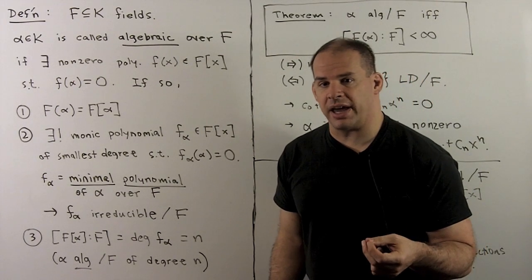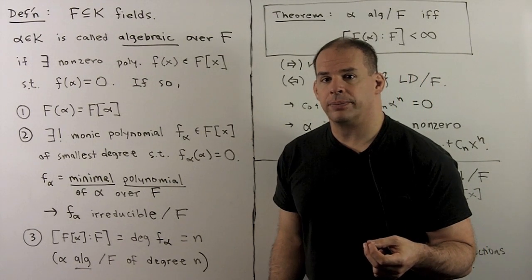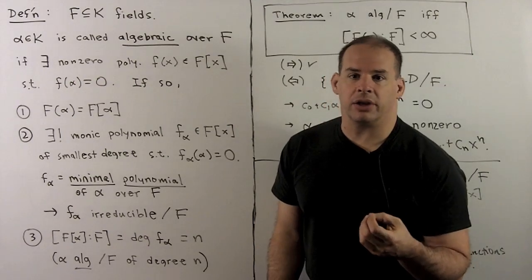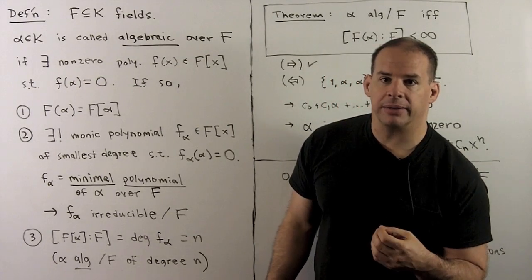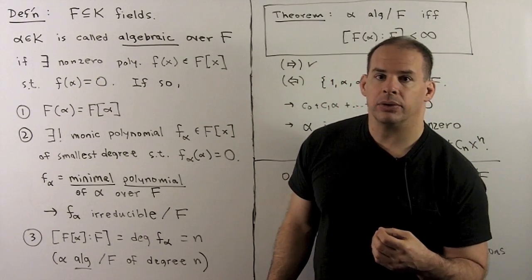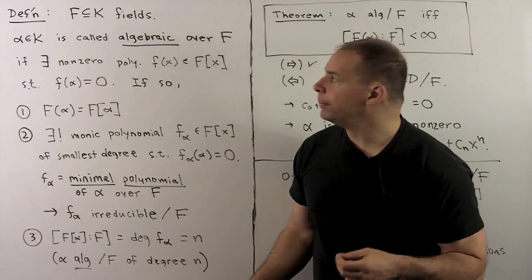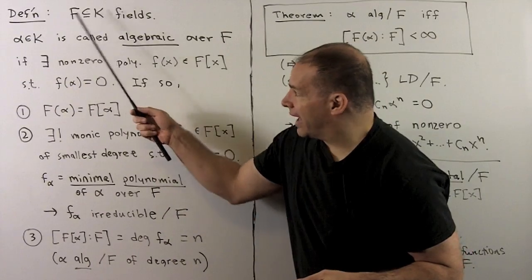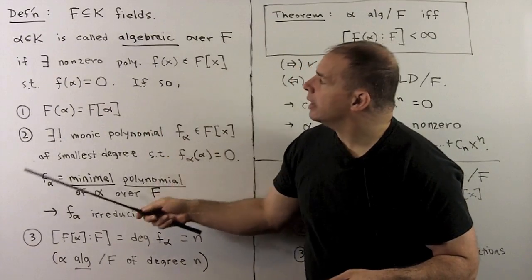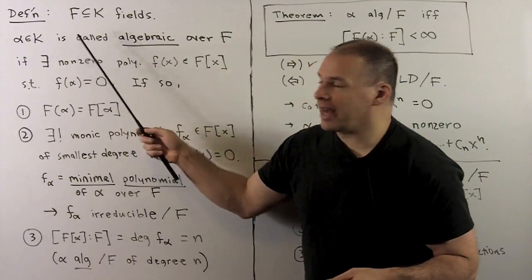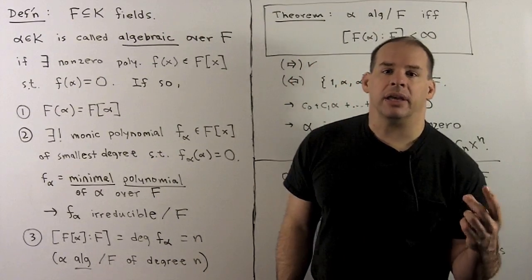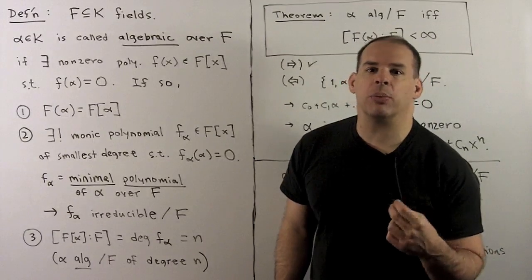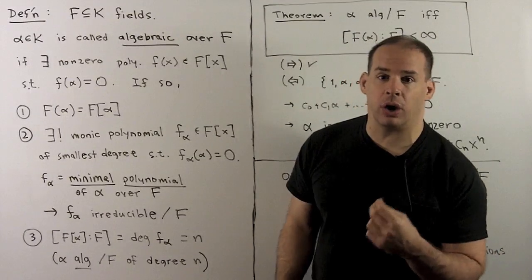We continue with simple extensions. In particular, we take a closer look at the property of algebraic. Recall, we have F a subfield of K. We say that alpha in K is algebraic over F if alpha is the root of some non-zero polynomial with coefficients in F.